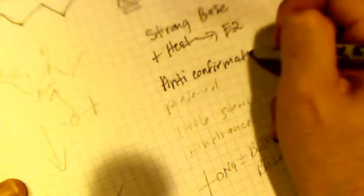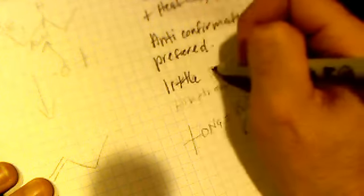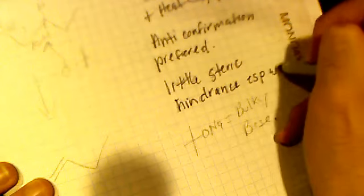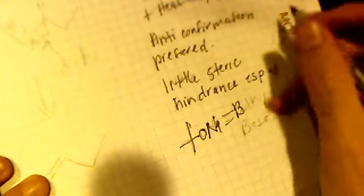Anti-conformation preferred. That's easy in acyclic molecules. And there should be little steric hindrance, especially with sodium tert-butoxide, which equals a bulky base.